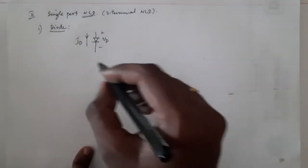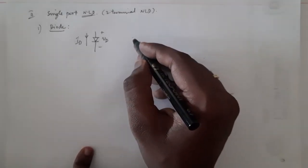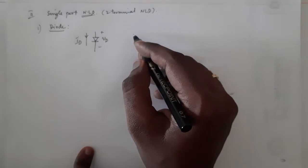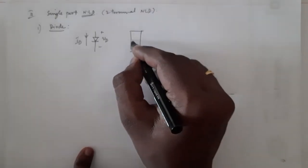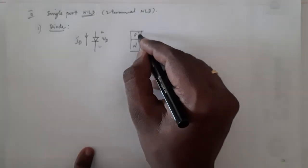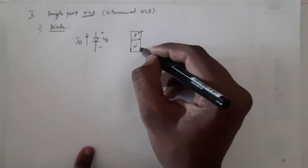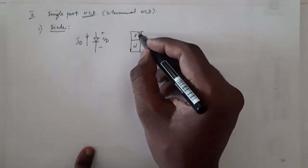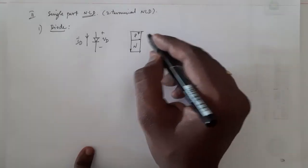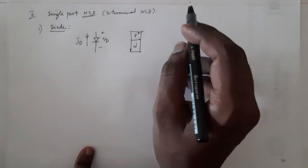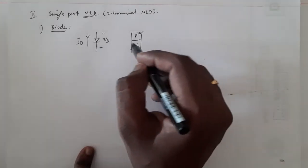The exact device-level representation of the diode is something you would have learned in your device courses. It is essentially a P-N junction — mostly a P⁺N junction — a semiconductor, mostly silicon, with a depletion region. However, we will not be using those device-level details for this circuit course.